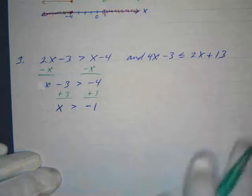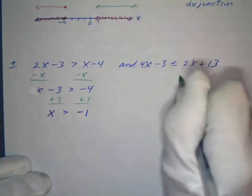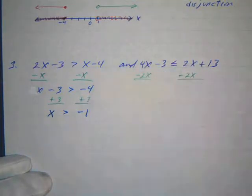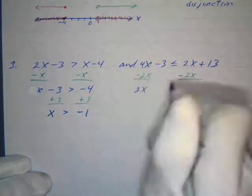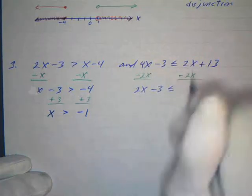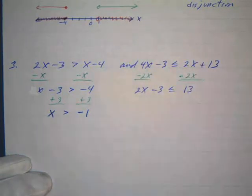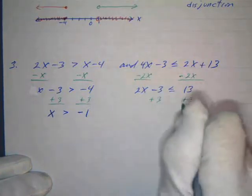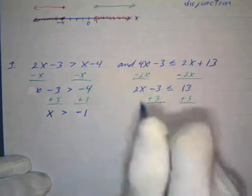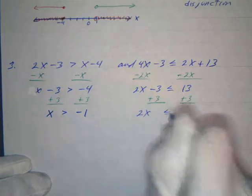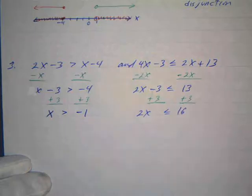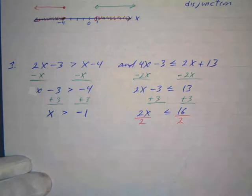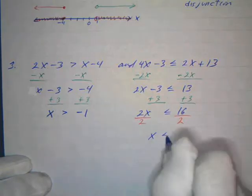For the second inequality, 4x − 3 ≤ 2x + 13: subtract 2x from both sides to get 2x − 3 ≤ 13, then add 3 to both sides to get 2x ≤ 16. Dividing both sides by positive 2 — which doesn't change the direction of the inequality — gives x ≤ 8.